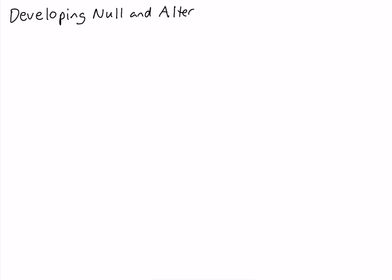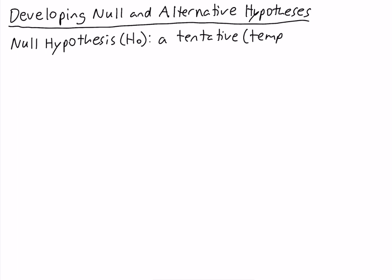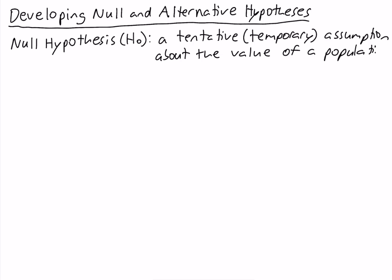Developing the Null and Alternative Hypotheses. In hypothesis testing, we have a Null Hypothesis, which we write H0, and it is a tentative — or in other words, temporary — assumption about the value of a population parameter, such as the population mean or population proportion, and so on.